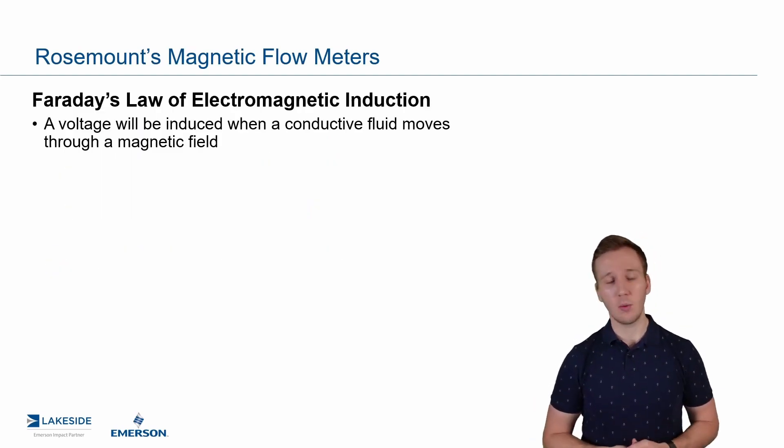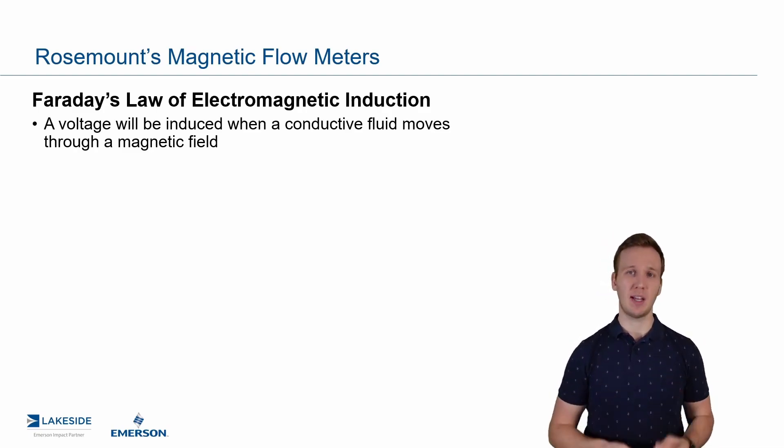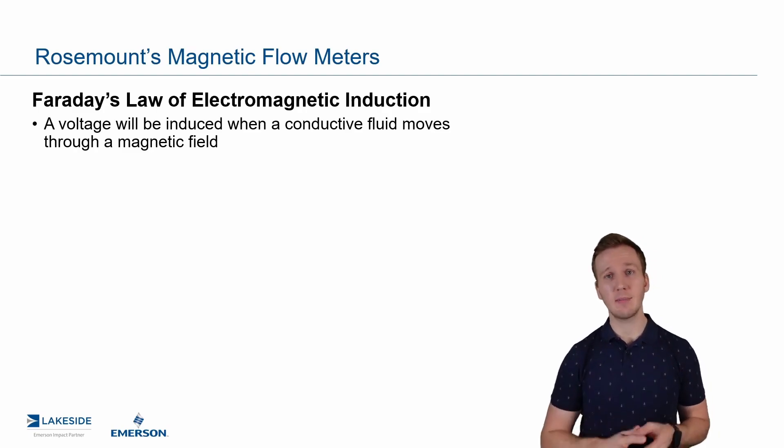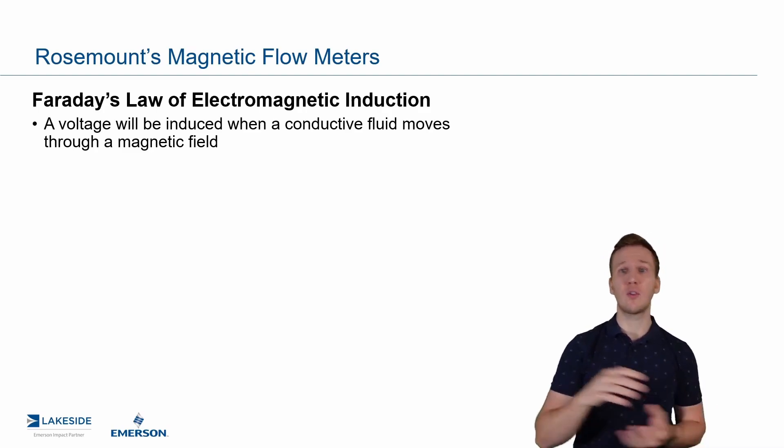So how does a magnetic flow meter work? It takes advantage of something called Faraday's Law of Electromagnetic Induction. And this sounds complex, but it's a very simple principle. Basically, it says that a voltage will be induced when a conductive fluid travels through a magnetic field.